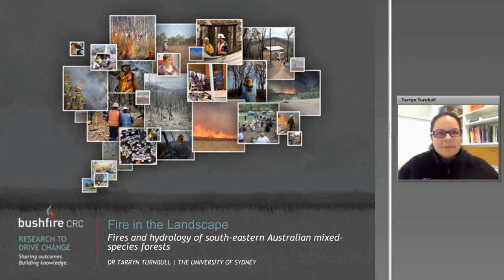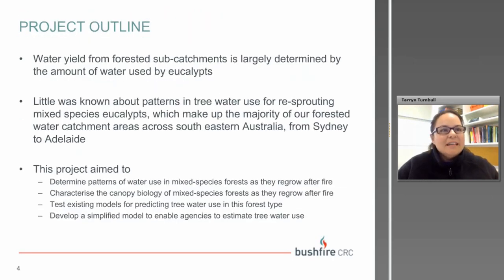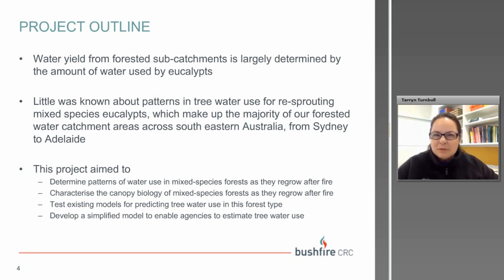In Australia, anywhere between 50 to 90% of water falling on a catchment will be transpired back to the atmosphere by eucalypts. Our catchments are vegetated with two main forest types: ash forests and mixed species forests. The hydrology of ash-type forests is much better known. We didn't know much about the patterns in tree water use after fire in re-sprouting mixed species forests, or the biology of the canopy in that forest type as it regenerated. For this project we had four aims: determine patterns of water use in mixed species forests as they regrow after fire, characterise canopy biology during regeneration, test existing models for predicting tree water use, and develop a simplified model for agencies to estimate tree water use.